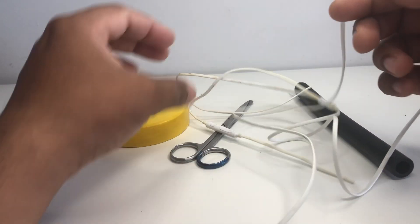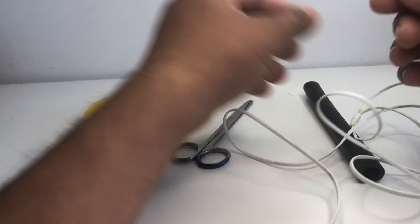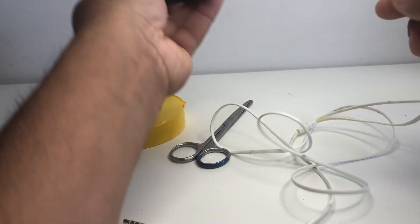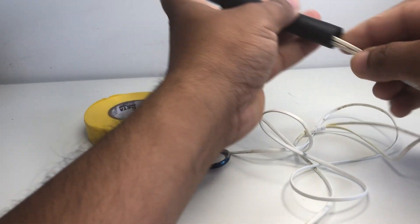Now what I will do is pass one end of my hands-free, the head side, through this rubber pipe.